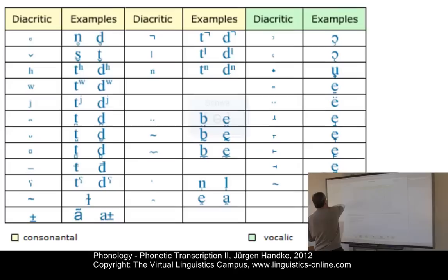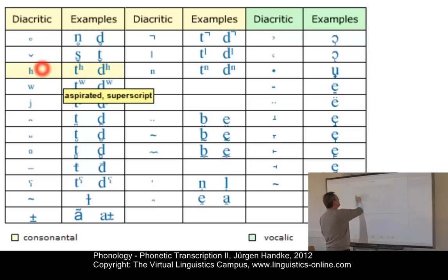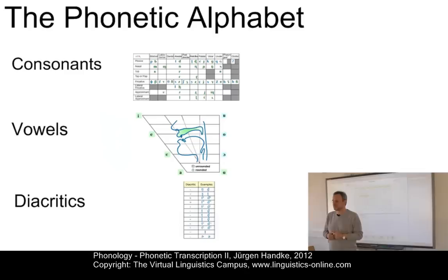Finally, we have diacritics. Diacritics are additional elements that define phonetic details that can be associated with each particular sound symbol. For example, we have the diacritic superscript H, which defines a plosive as aspirated. With this system, we can define the sound systems of the languages of the world.